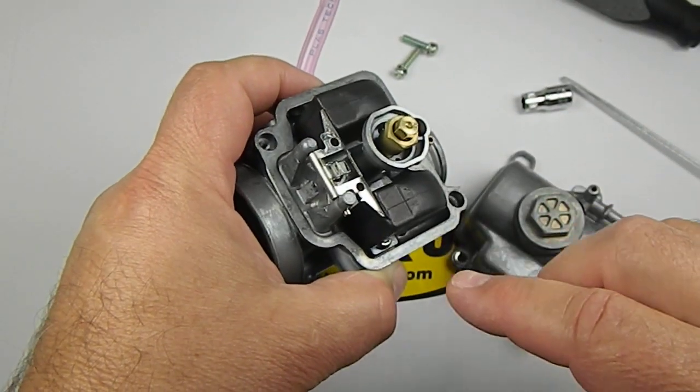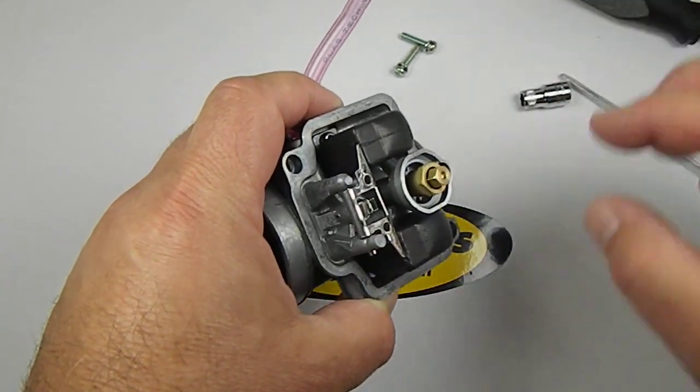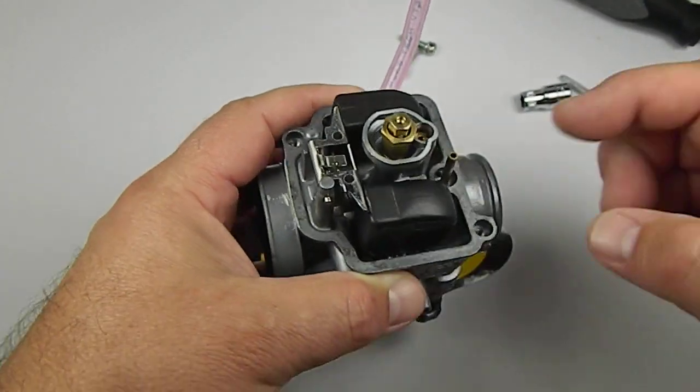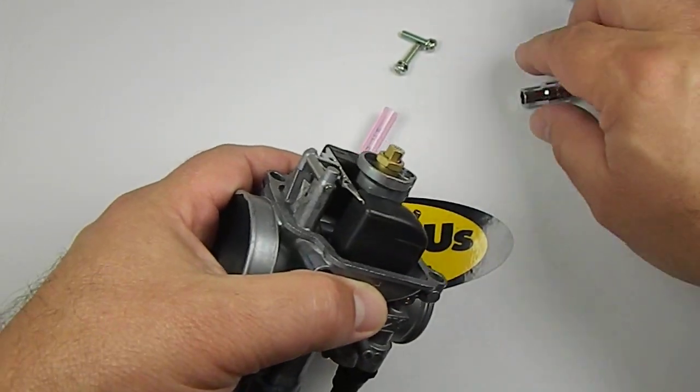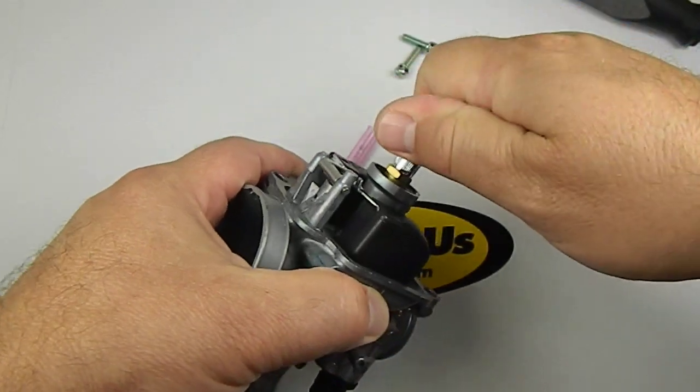When you take the cover off, you want to be careful not to bump or disturb the floats and get them out of adjustment. Again, there is the main jet right there, and take it out.